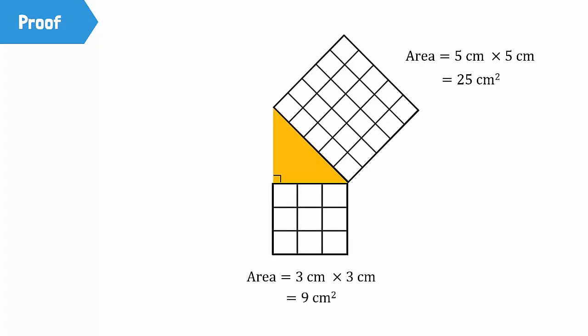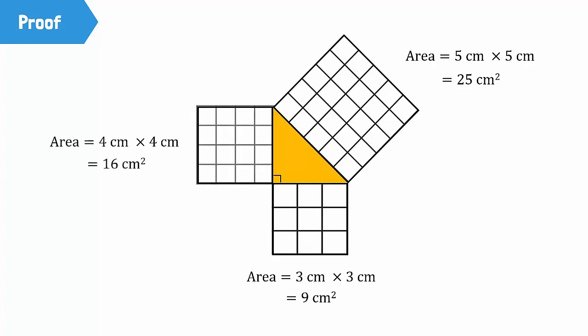Lastly, drawing a third square at the perpendicular will give us a square with an area of 4 cm times 4 cm, which is equal to 16 square cm.